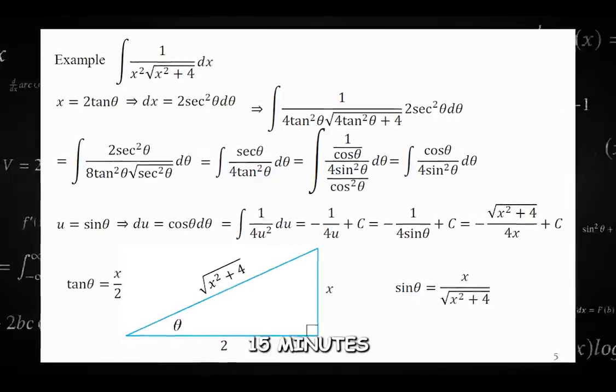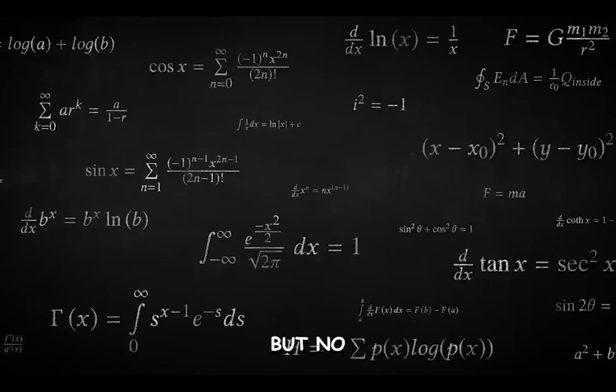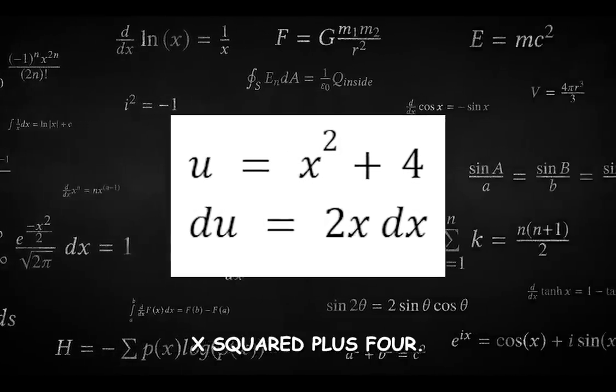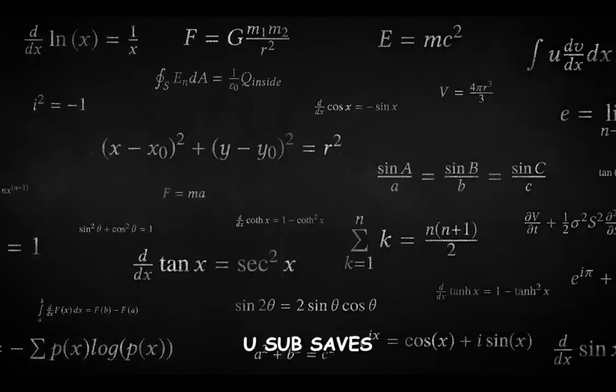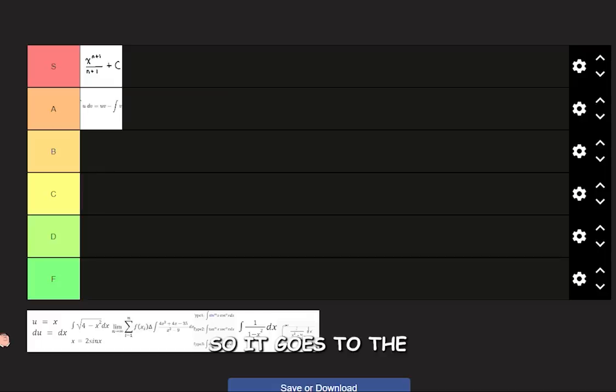Bro I have to spend 15 minutes doing trig substitution and I won't have enough time to finish my exam, but no. U-Sub to the rescue. Set U equals X squared plus four then proceed. U-Sub saves a lot of time and makes integrating really easy so it goes to the S-tier.